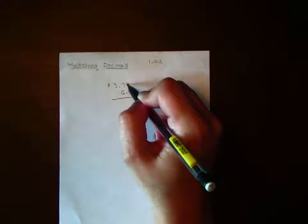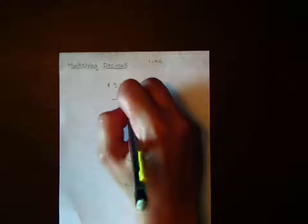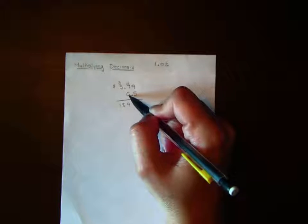So 5 times 9 is 45. 5 times 7 is 35, plus 4 is 39. 5 times 3 is 15, plus 3 is 18. I'm going to move to my tens position.